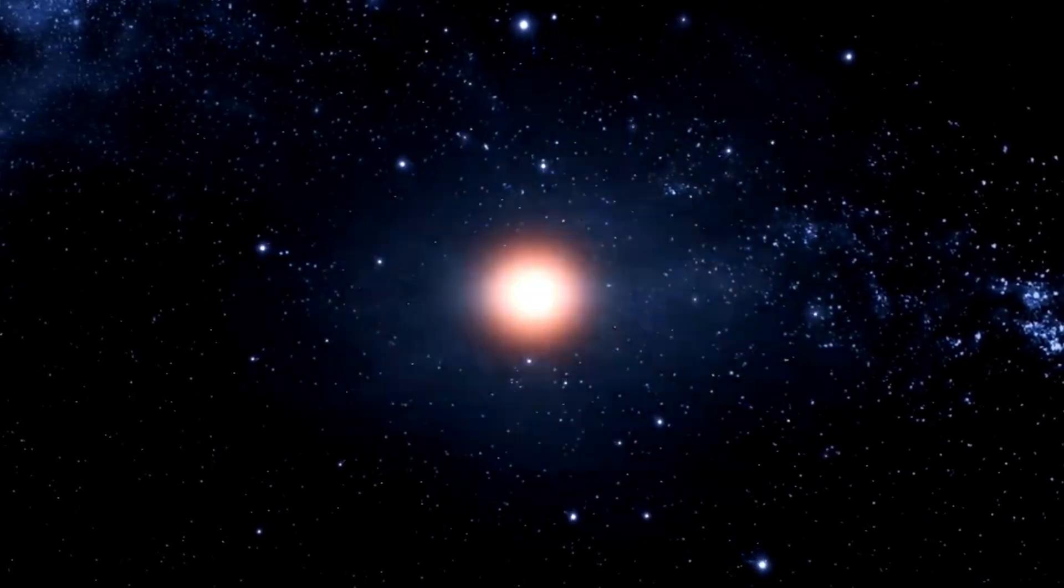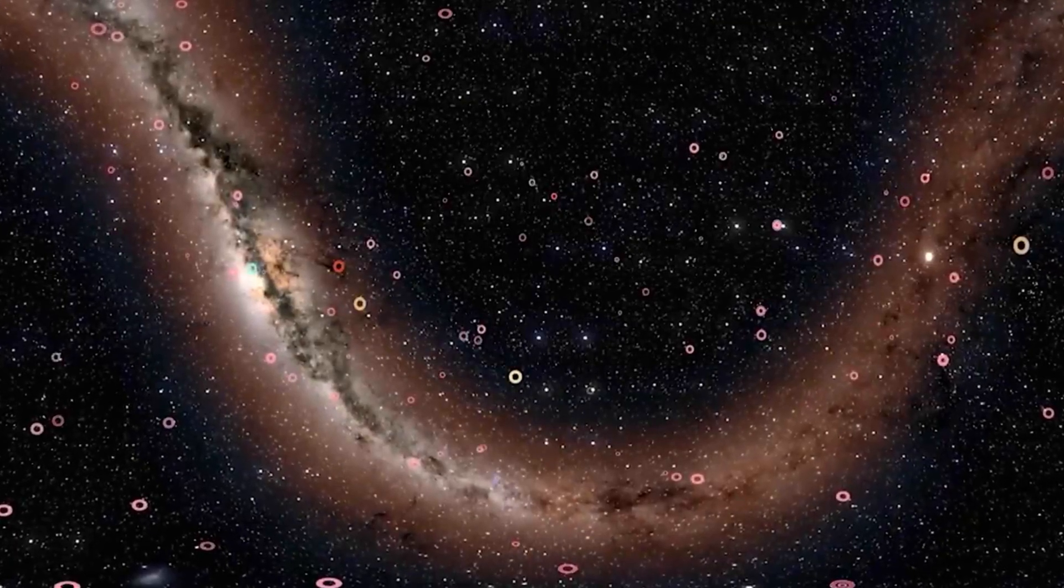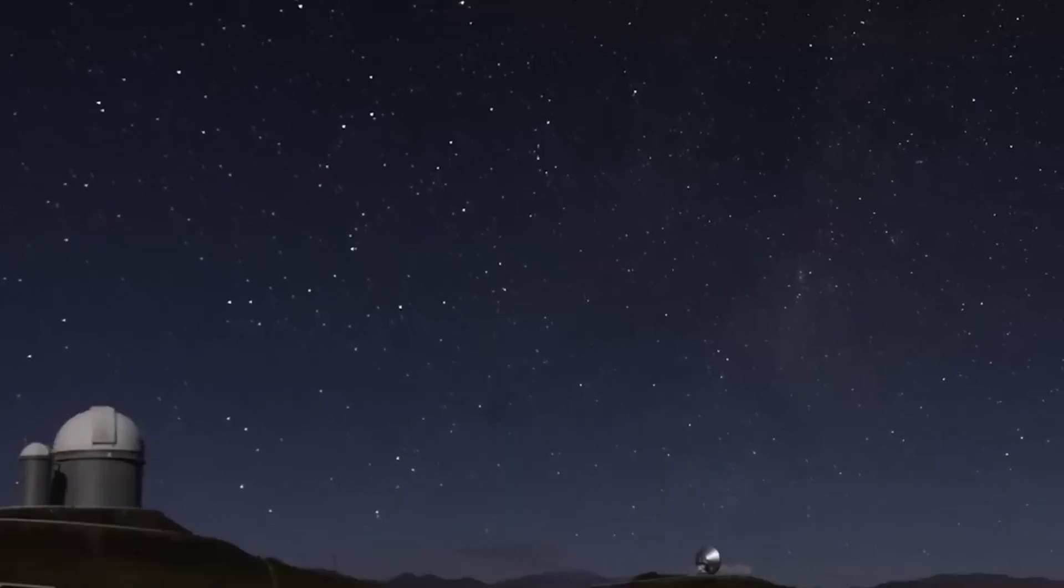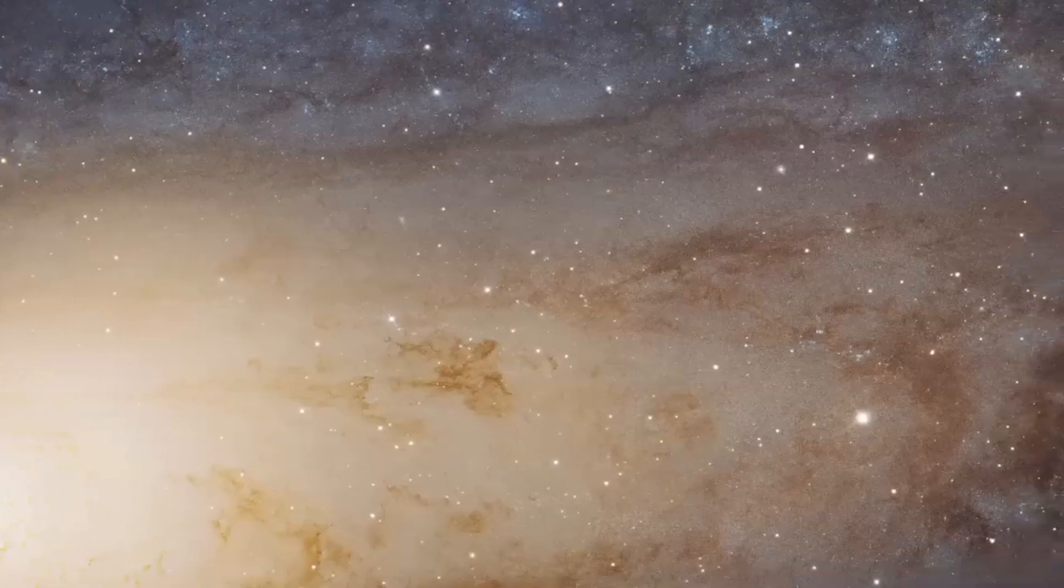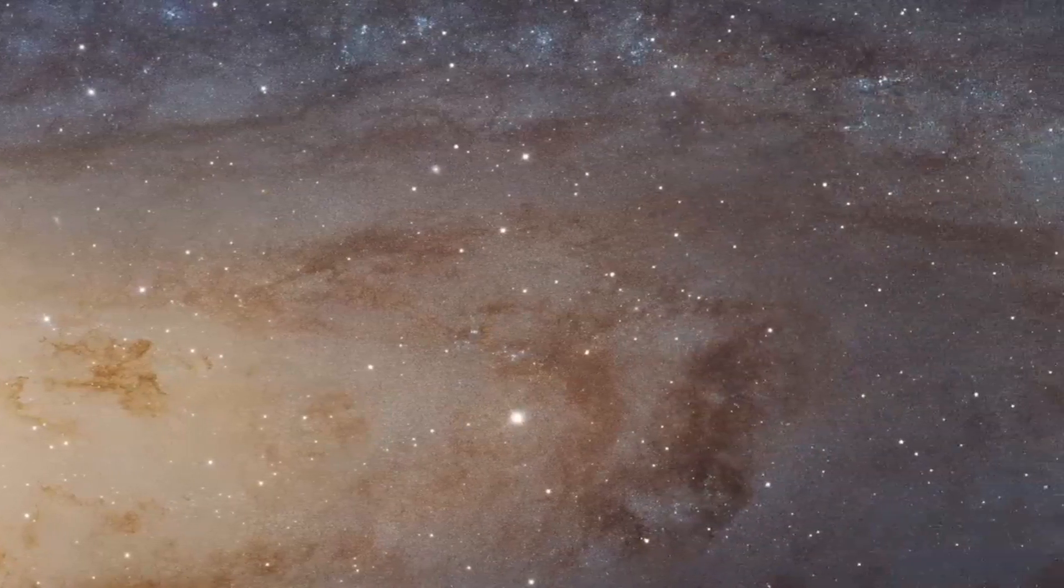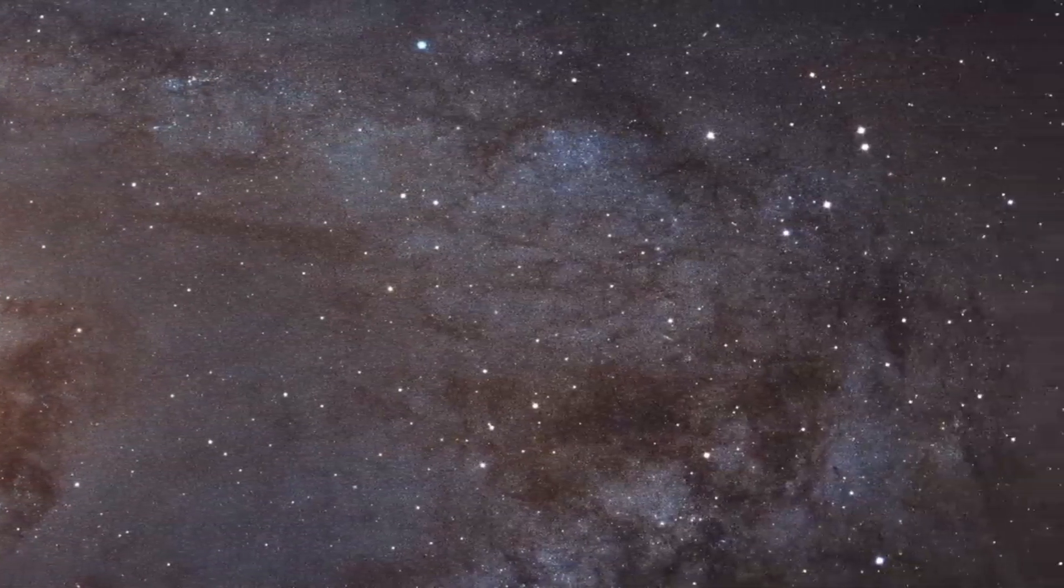So gravitational lensing is a fitting testament to Einstein's genius. His equations not only explained spacetime, but led to methods of peering across its unfathomable depths. Thanks to the foresight of relativity, Webb can act like a time machine to witness galactic infancy in the ancient universe. We have Einstein to thank for the spacetime warping lenses revealing places like Sparkler across cosmic time.